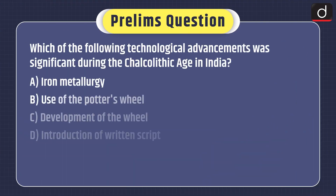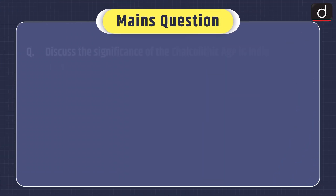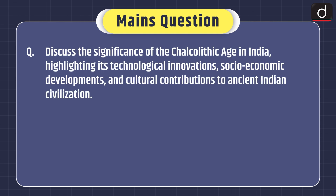Now for practice questions. The prelims-based question: Which of the following technological advancements was significant during the Chalcolithic Age in India? Options are: iron metallurgy, use of the potter's wheel, development of the wheel, or introduction of written script. The mains practice question: Discuss the significance of the Chalcolithic Age in India, highlighting its technological innovations, socio-economic developments, and cultural contributions to ancient Indian civilization.